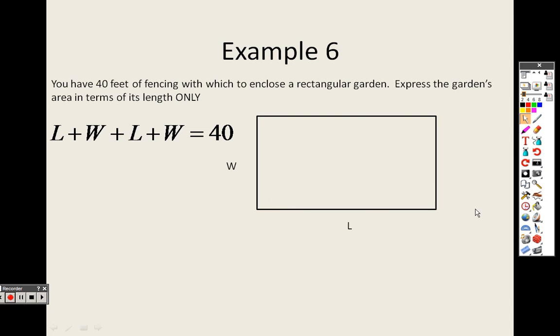So I have a length plus a width plus a length plus a width. That's why I have that formula there. All that equals 40. Well, I have 2 l's and 2 w's, which is why I have 2 l plus 2 w.